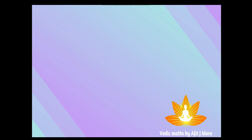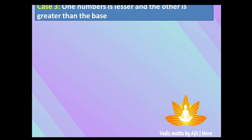Case three is where one number is lesser and the other is greater than the base. The basic rule remains the same as in the previous two cases. When the deficiency is one positive and one negative, the product of deviations is negative — that's the part we need to handle. All these cases fall under the Nikhilam Sutra.